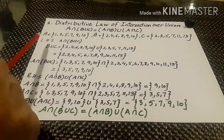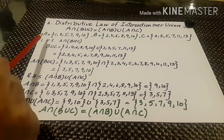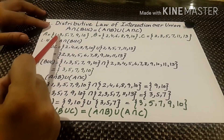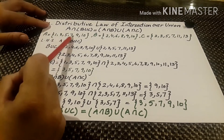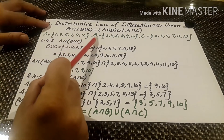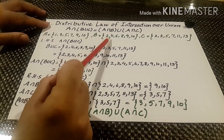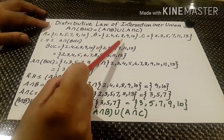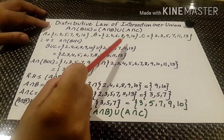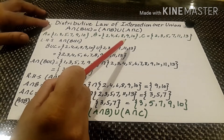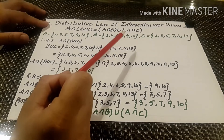In the question we have three sets. Set A contains elements 1, 3, 5, 7, 9 and 10. Set B has 2, 4, 6, 8, 9, 10. And C has 2, 3, 5, 7, 11 and 13 as elements.